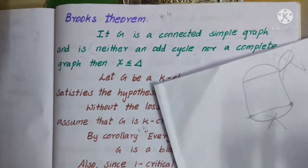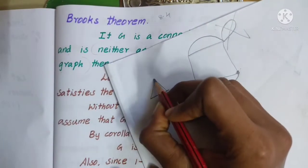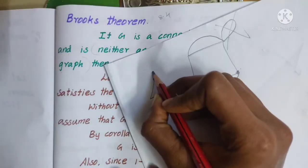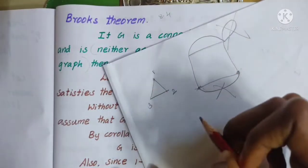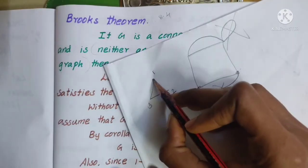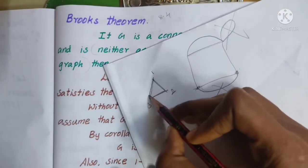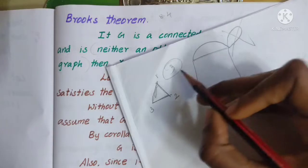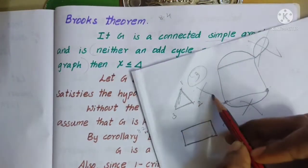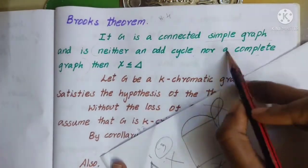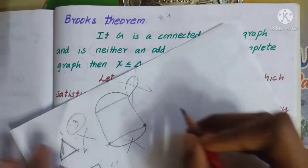An odd cycle means: take vertices 1, 2, 3 — three vertices forming a cycle 1, 2, 3. There are 3 edges in this cycle, so this is an odd cycle. That's why we also have a complete graph.